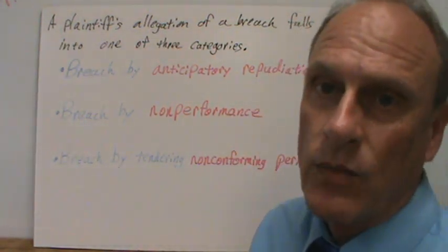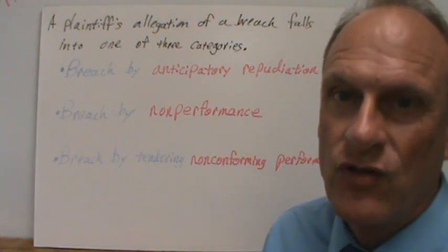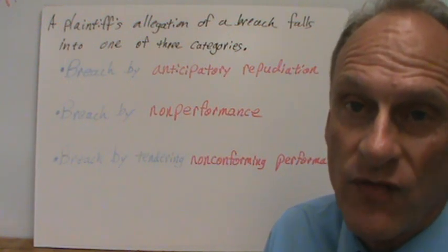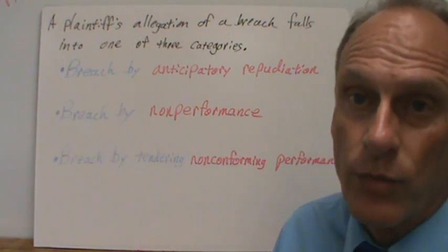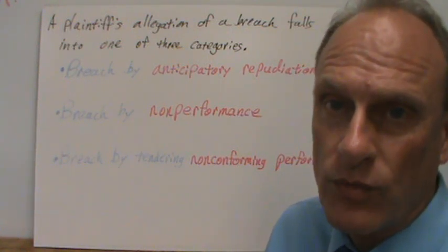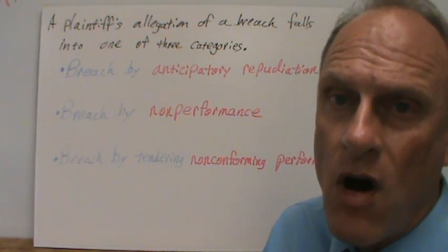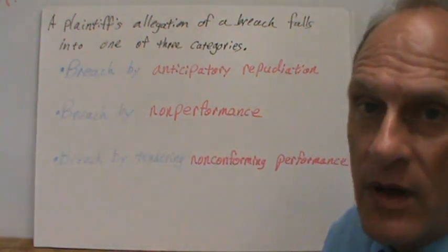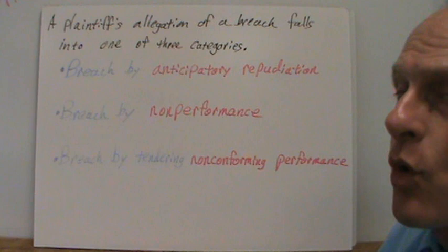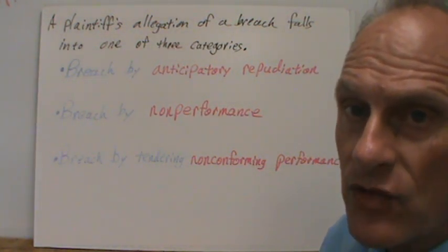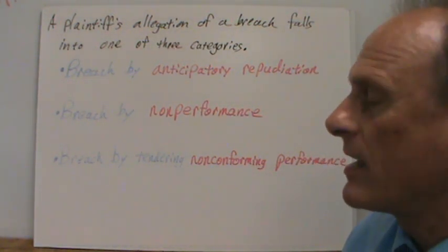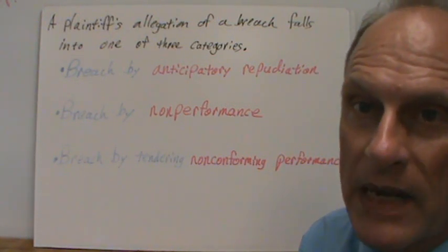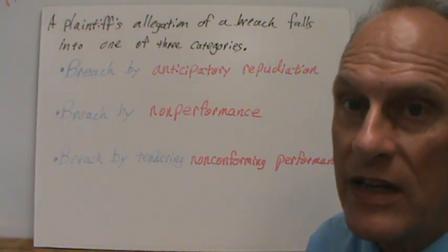Whenever we do have a breach alleged in a lawsuit — or when trying to resolve a dispute before one gets filed — those breaches will fall into one of three categories. We have breach by anticipatory repudiation, breach by non-performance, and finally breach by non-conforming performance. We're going to look at each one of these three.